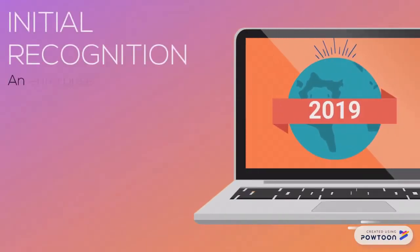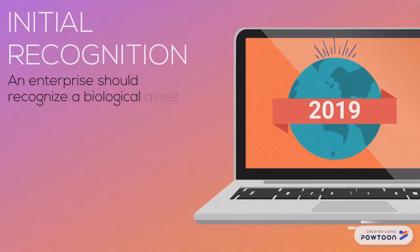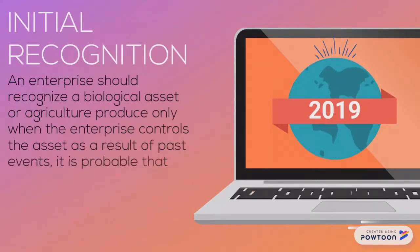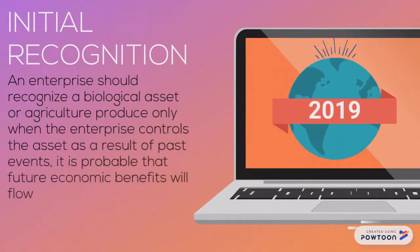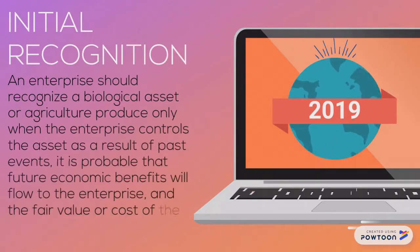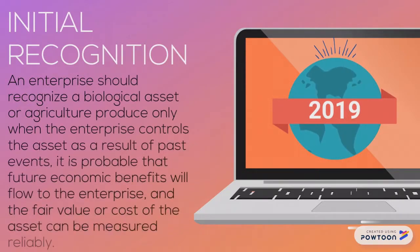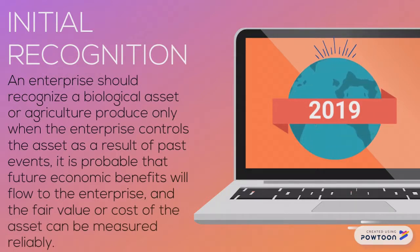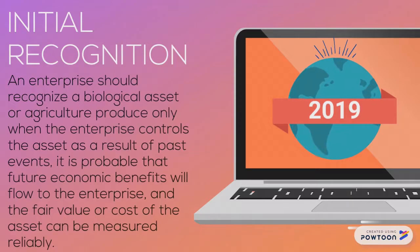Initial recognition: An enterprise should recognize a biological asset or agricultural produce only when the enterprise controls the asset as a result of past events, it is probable that future economic benefits will flow to the enterprise, and the fair value or cost of the asset can be measured reliably.